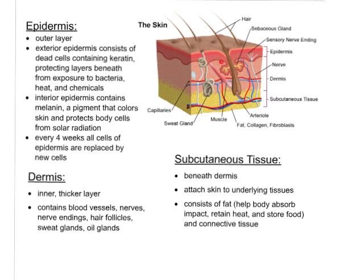As new cells are formed, the process of those cells replacing the old cells and rising to the surface continues, and within about four weeks that process is complete. The very outer layer — the exterior epidermis — those are the dead cells, basically sloughed off and discarded. Those cells in the exterior epidermis contain keratin, a chemical that protects the layers underneath from exposure to bacteria, heat, and chemicals, providing protection.